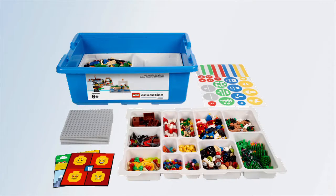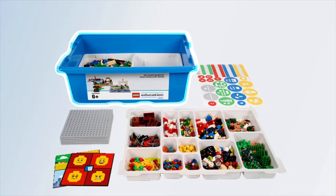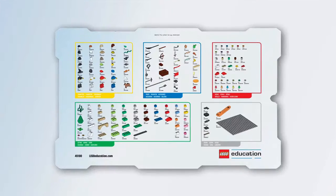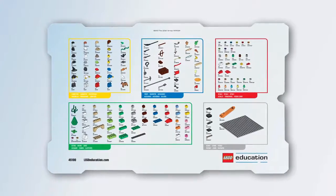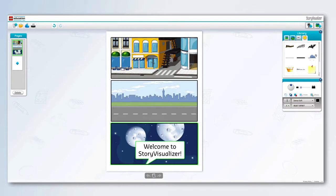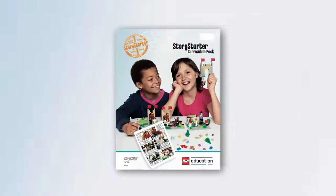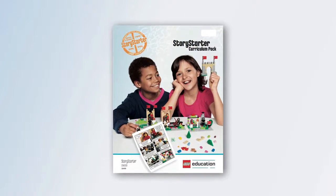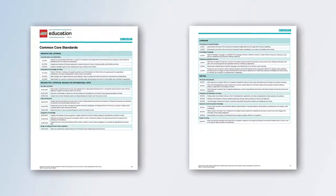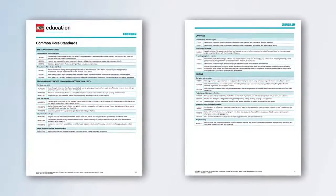The Story Starter solution consists of a set of Lego elements packaged in a sturdy storage box with two element trays, a sticker sheet, and an element survey that can be used as a checklist to make classroom management easier. Also included are the Story Starter software and the Story Starter curriculum pack that contains 24 activities, which encompass a wide range of language arts standards.